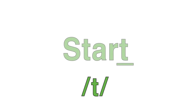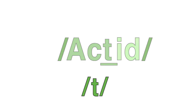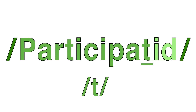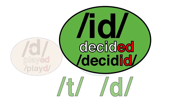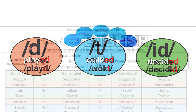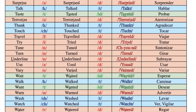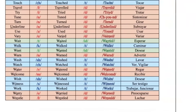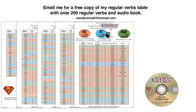Start becomes started. Act becomes acted. Create becomes created. Participate becomes participated. So, to summarize: if the final sound of a regular verb ends with T or D, the pronunciation is -id. If you would like to practice and learn more about the past simple and past participle forms of regular verbs, email me to receive a free copy of my regular verbs table, which also comes with a free set of CDs so you can hear and repeat the correct pronunciation.